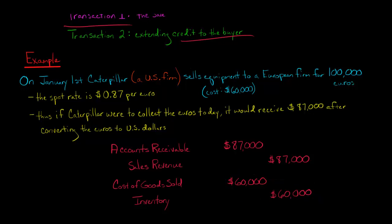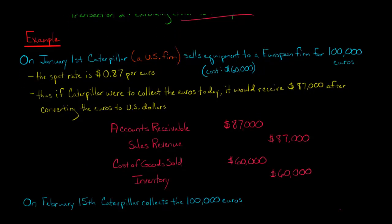And then we're going to debit cost of goods sold and credit inventory for $60,000. That's what Caterpillar originally paid for the equipment, or they're a manufacturer, so what it costs them to build the equipment.